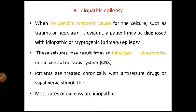Idiopathic seizures may result from inherited abnormality in the central nervous system — so the role of genetics comes in. Patients are treated chronically with anti-seizure drugs or vagal nerve stimulation. Most cases of epilepsy are idiopathic.